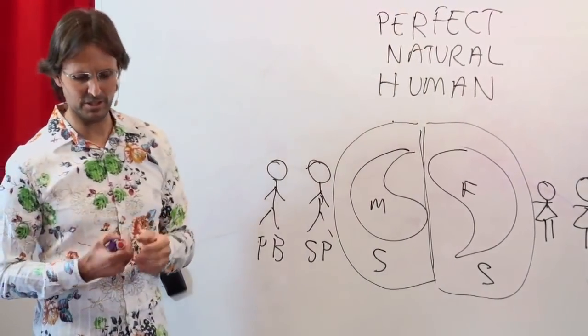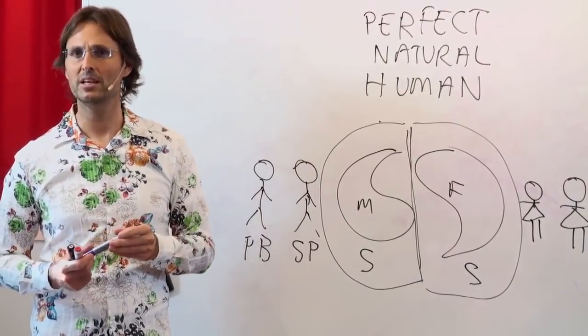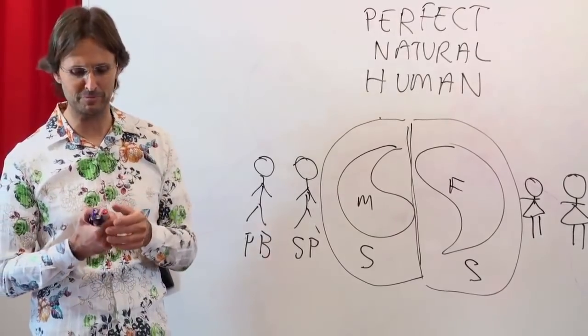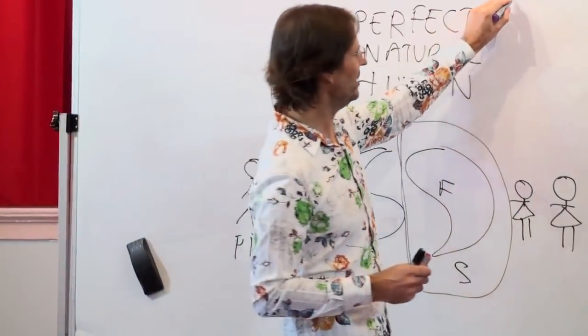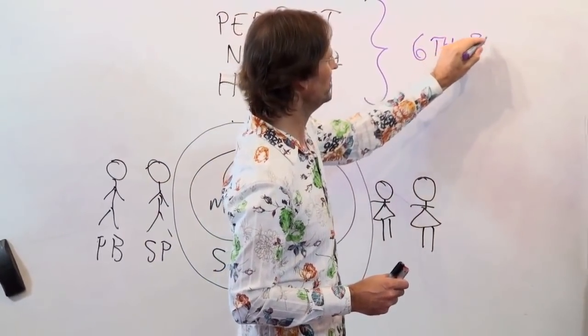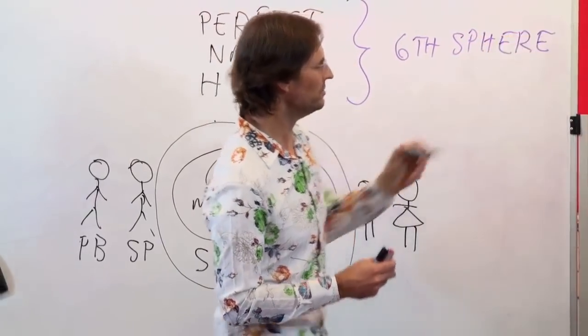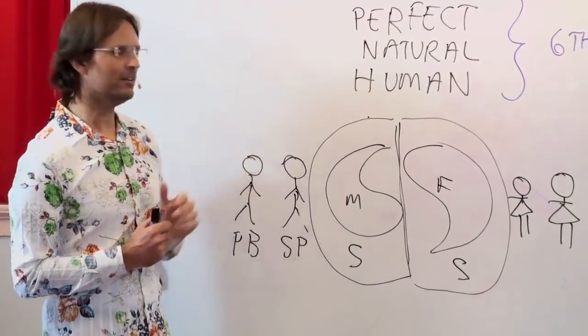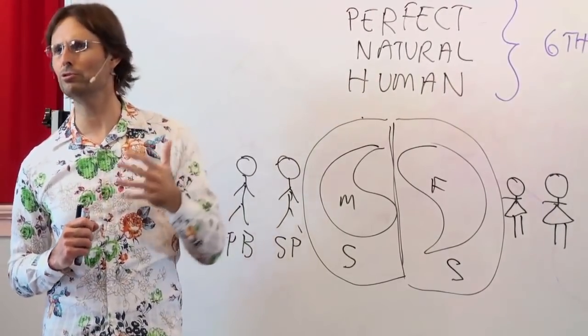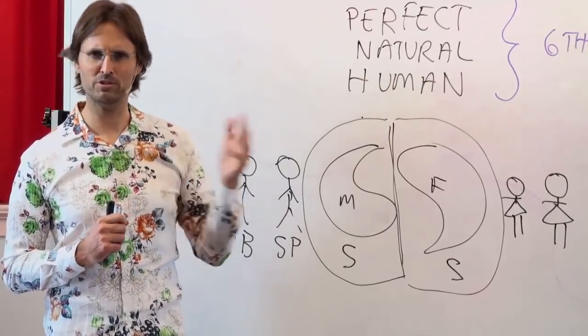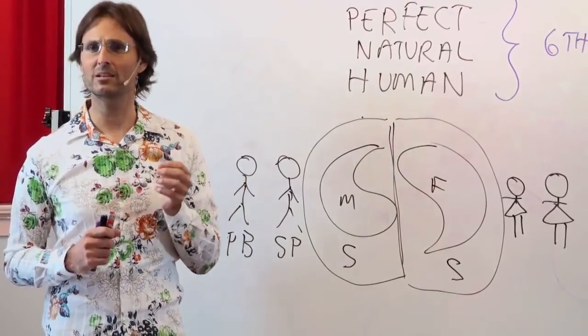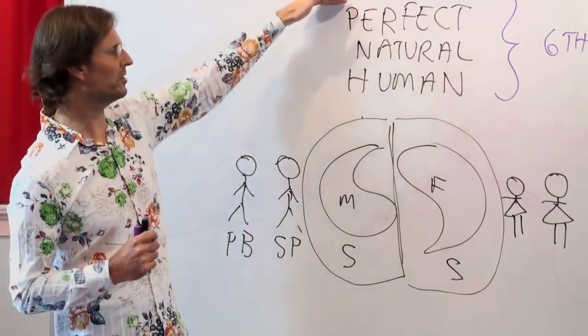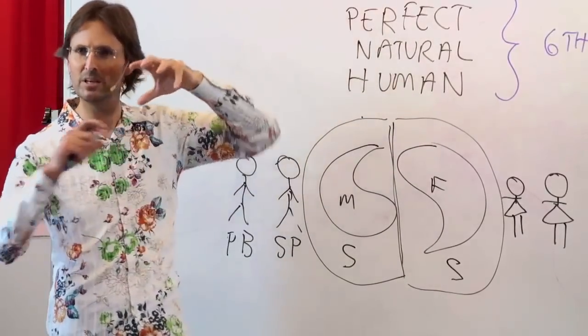The perfect natural human is a state that any person who develops their soul can reach in their future. There are literally billions of people who have reached that condition in the spirit world after they've passed from the earth. That condition is equivalent to the sixth sphere or sixth dimension of the spirit world.